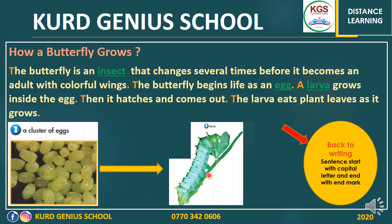Look at these two pictures. This one is an egg — these are butterflies' eggs. Inside here we have a small, tiny thing which is larva, or we can say caterpillar. After the larva grows inside the egg, it hatches and comes out. Here is the larva. Larva eats plants and leaves as it grows.